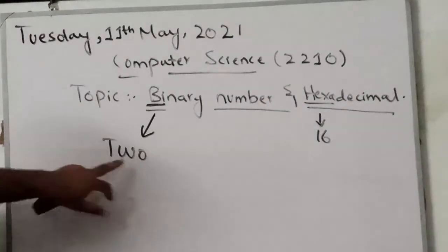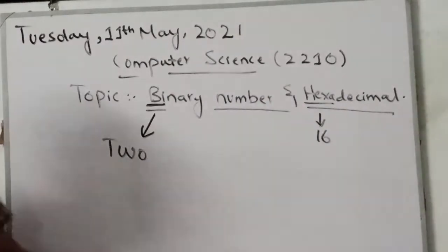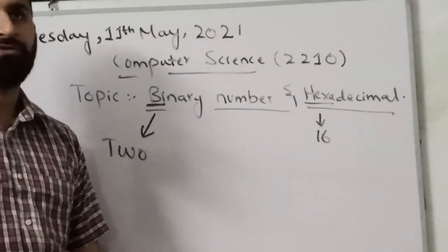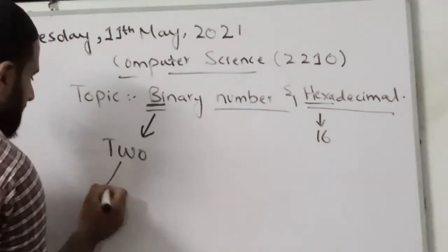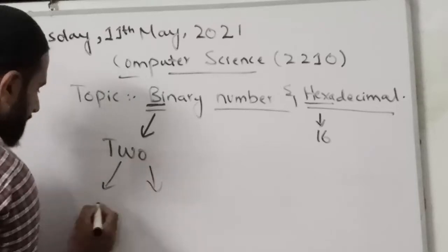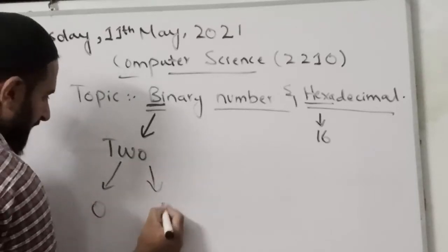So let's take a start. Why do we use binary numbers? Binary numbers mean you can use either 0 or you can use 1.